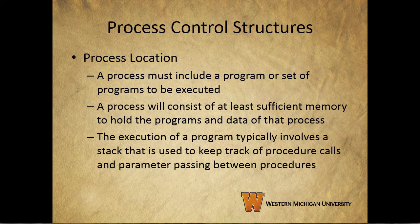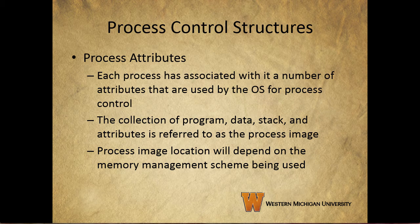Let's talk about process control structures. As to location, a process has to include a program or a set of programs to be executed, and it will need at least sufficient memory to hold those programs and their data. It will also typically include a stack used to keep track of procedure calls and parameter passing between procedures. A process also has associated with it a number of attributes used by the operating system for process control. The collection of program, data, stack, and attributes is referred to as the process image. Process image location will depend on the memory management scheme being used. Table 3.4 in your book has a breakdown of typical elements of a process image.